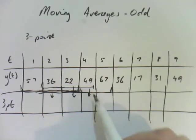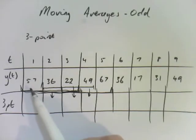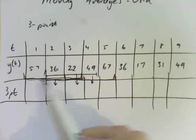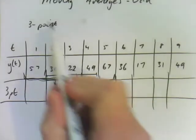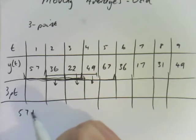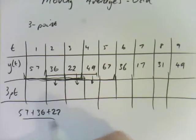So if we do it, I'll do some calculations here. Remember to find the average, you add your points together and divide by how many there are. So we're doing a three-point moving average. So we're going to add 57 plus 36 plus 22, and we're going to divide that by three, because there are three points.